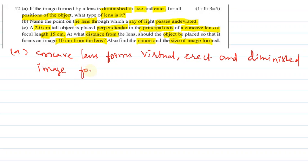For all positions of object in front of the concave lens, it always forms diminished, virtual, and erect images.